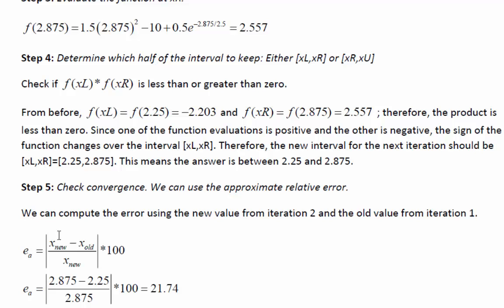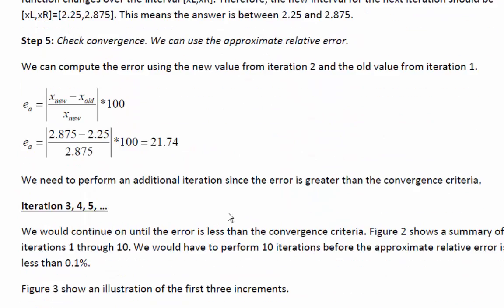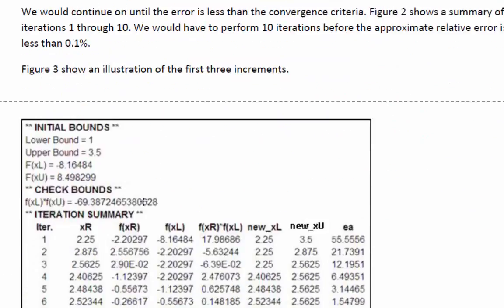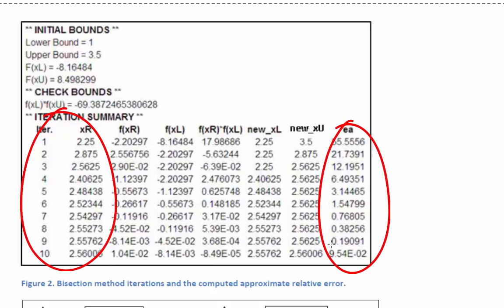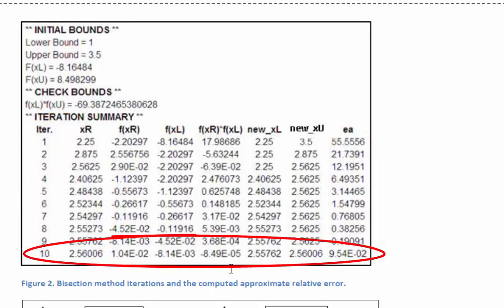We can check our convergence. Our previous estimate was 2.25, our current is 2.875. We subtract them, divide by the current estimate, and multiply by 100, and you have an error still of 21.74%. So we would want to continue with iterations 3, 4, 5, and so on. If we do that, we have our approximations here, our successive approximations and the corresponding error. In order to get down to 0.1% error, we would have to do 10 iterations.